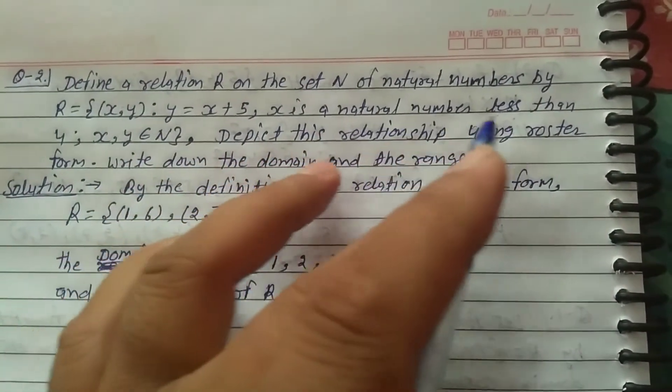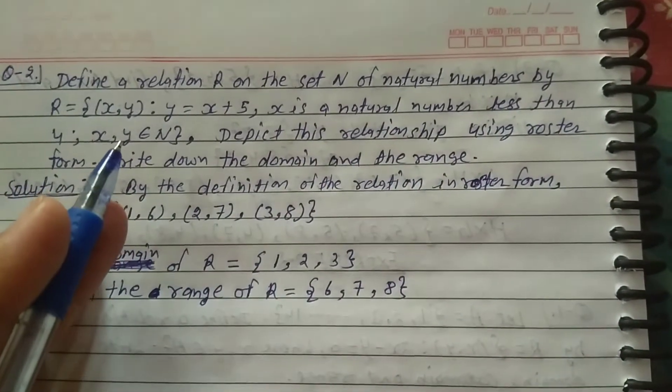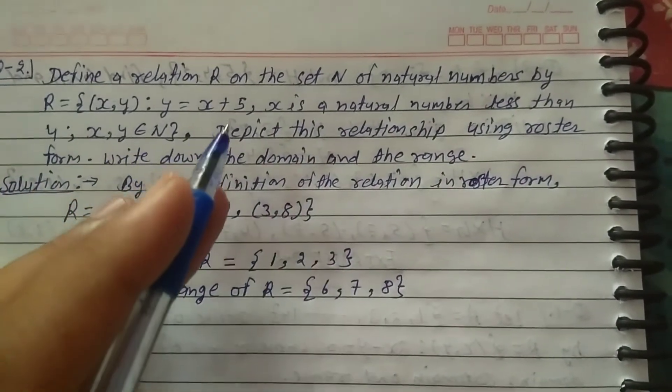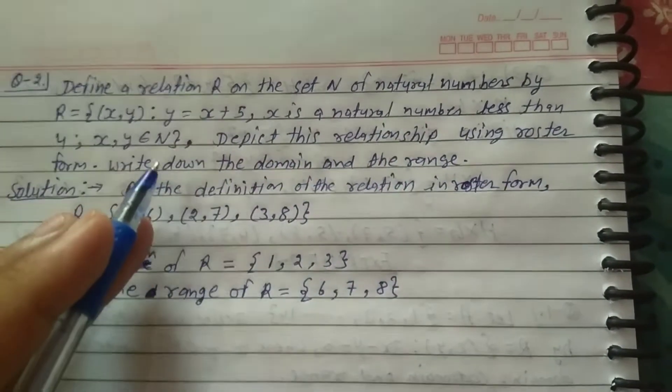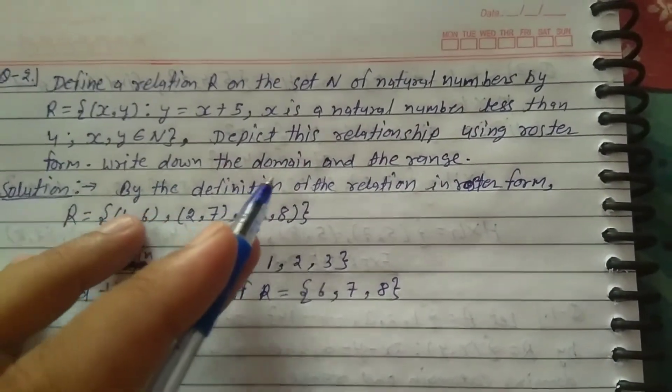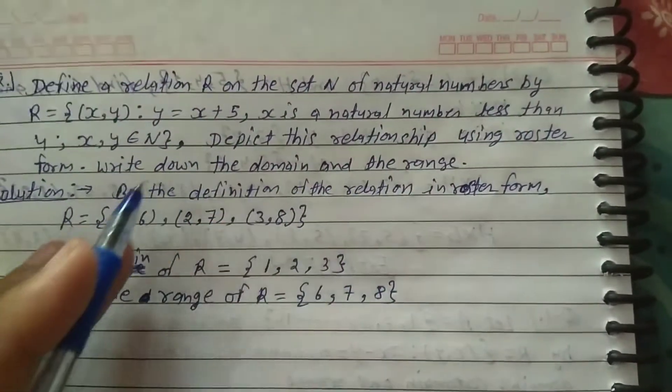X is a natural number less than 4, x and y belong to N. Depict this relationship using roster form. Write down the domain and range.